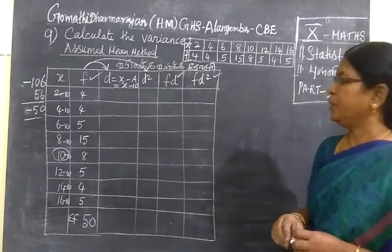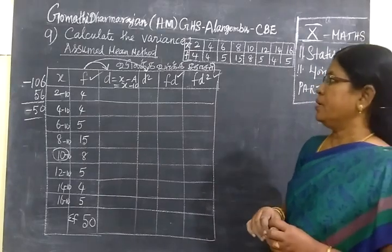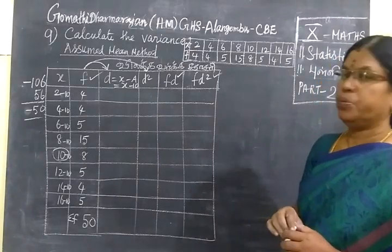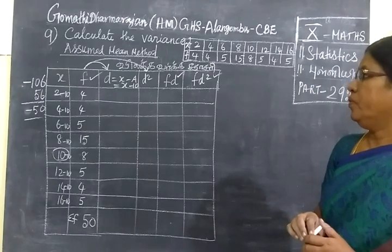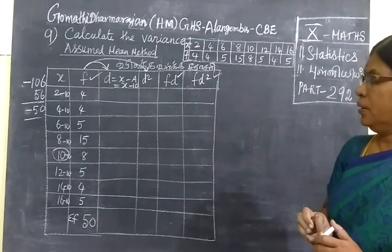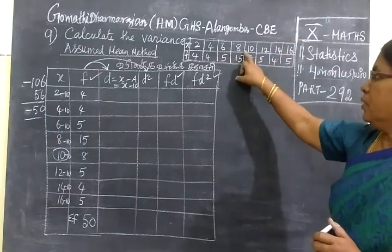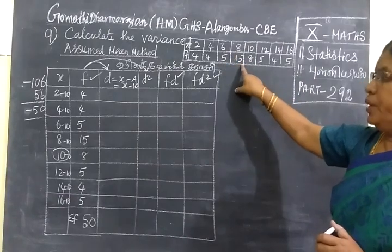Now we will see part 292: calculate the variance using assumed mean method. We will see the same method. This is a table called xf, group data.